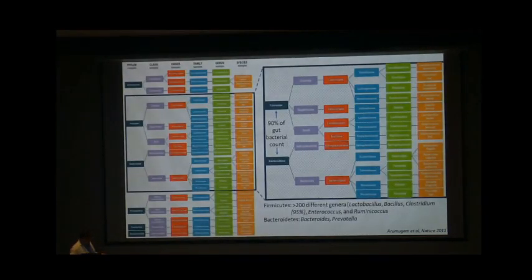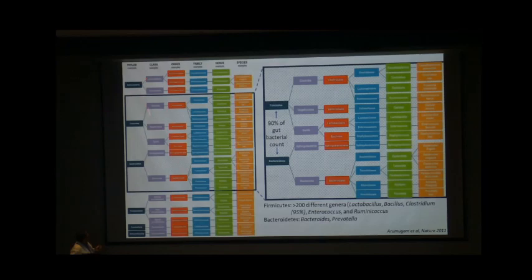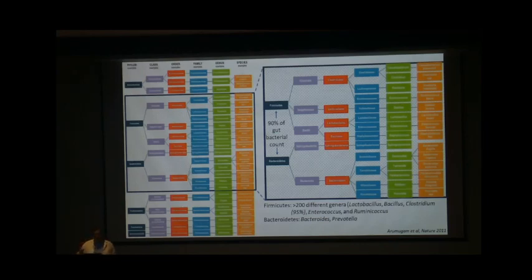Bacteria also follow the same phylum-class-order-family-genus-species distribution. As shown in this complex-looking graph, there are few phyla — phylum is singular, phyla is plural — and this number increases as we move toward species. The differences become finer and finer: broader differences are at the phyla level, finer differences at the species level.